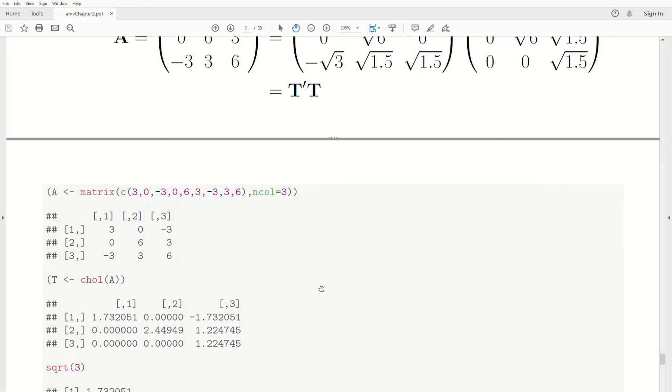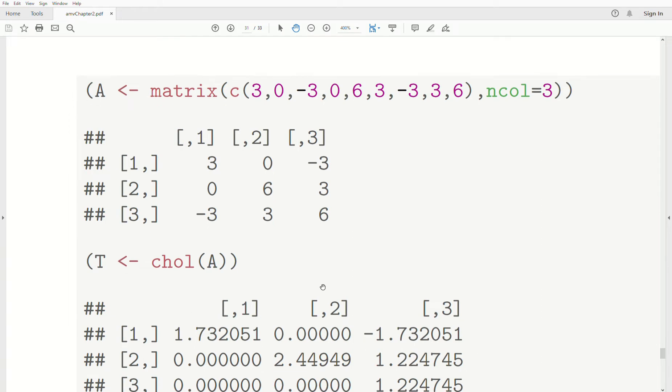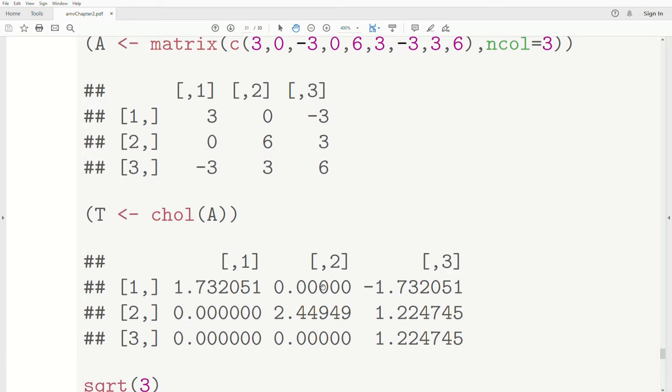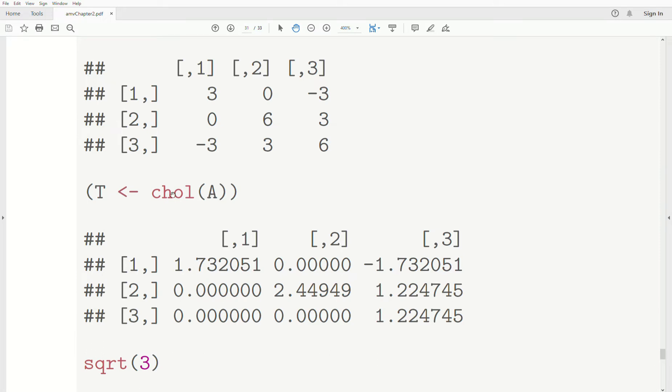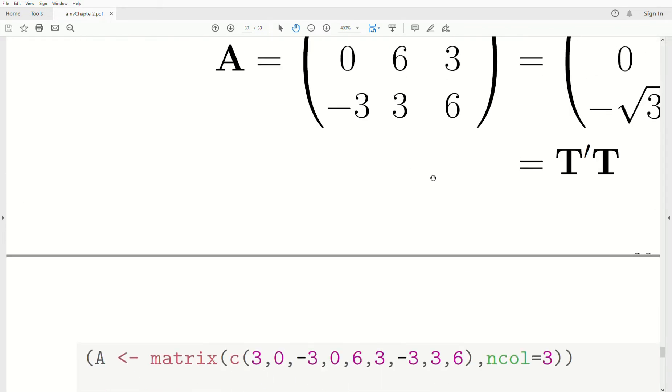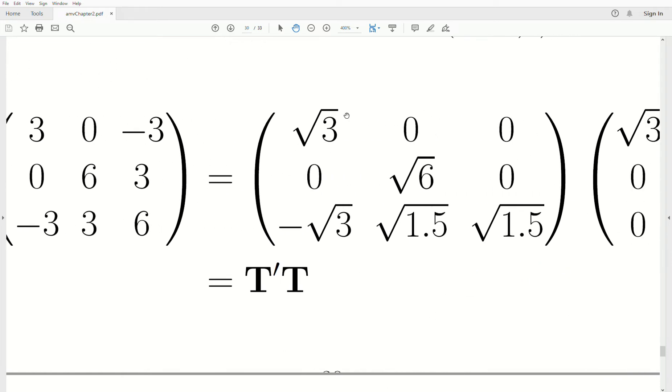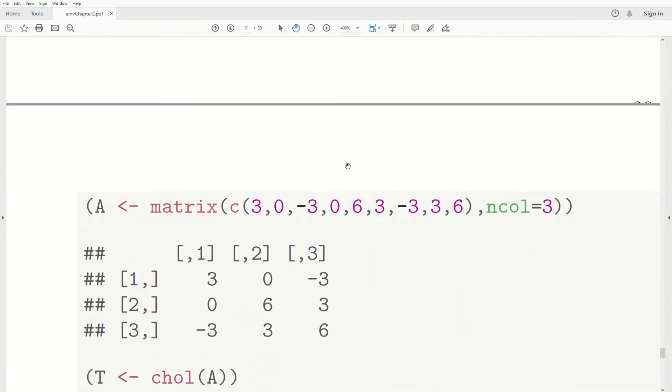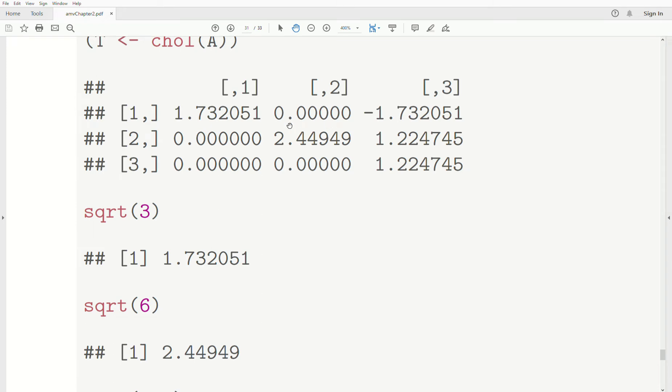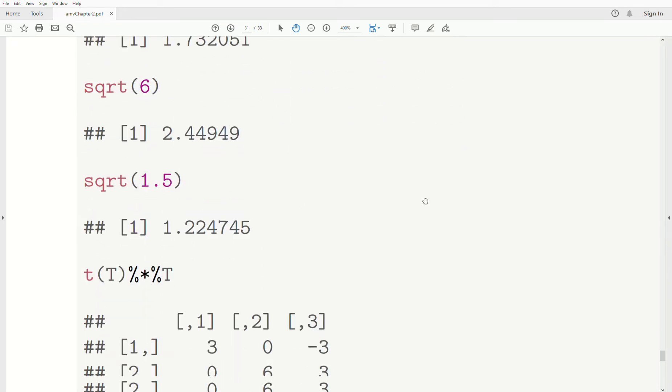So to do this in R is this. We take a matrix A, and chol, Cholesky's decomp, is the function to do that. So if we take Cholesky's decomp of A, store it to T, notice it's an upper triangular matrix. Even though this entry is zero, it's still upper triangular because below the diagonal is all zeros. Now you might think this doesn't look like this matrix. But I'm going to show you that these square root values are exactly what's in this matrix below. If we take the square root of 3, that's this, that's that entry. The square root of 6 is this entry. The square root of 1.5 is this entry. So they are exactly the same.